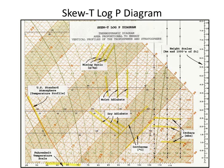There are many lines on this diagram, including temperature or isotherms, pressure or isobars, mixing ratio, dry adiabats — which represent the unsaturated ascent of an air parcel — and moist adiabats, which show the ascent of a saturated air parcel.